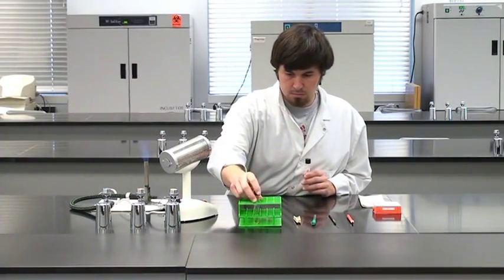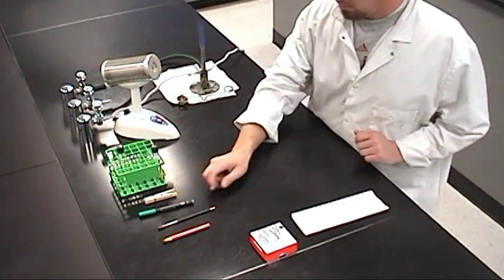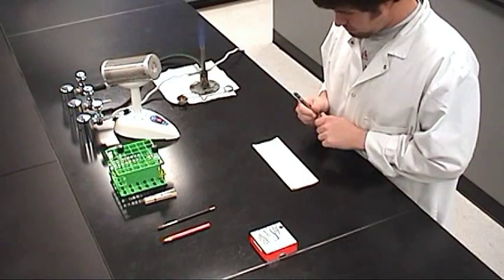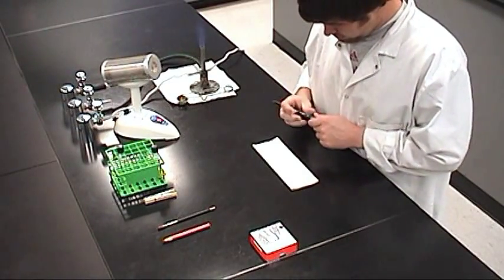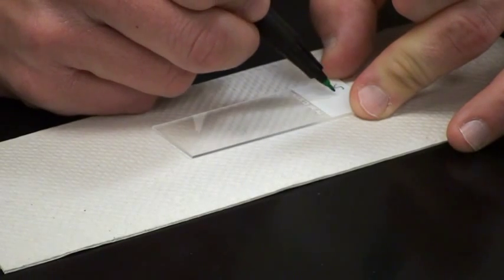Store the culture tube in the tube rack until you are ready to take a sample. Start by preparing the slide. Use the permanent marker to write the name of the specimen on the frosted end of the slide.